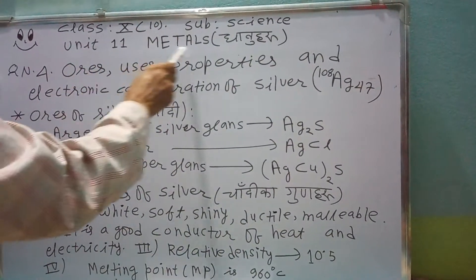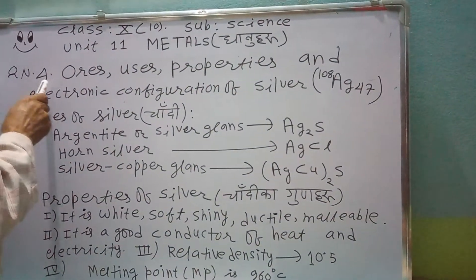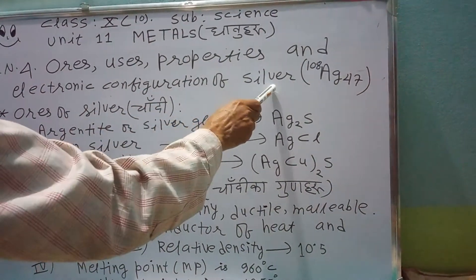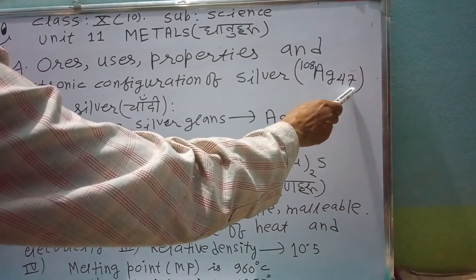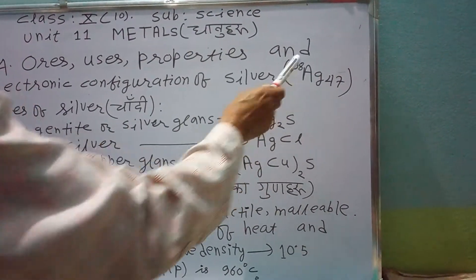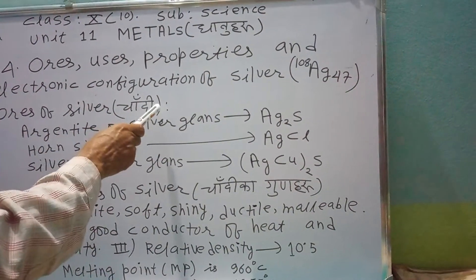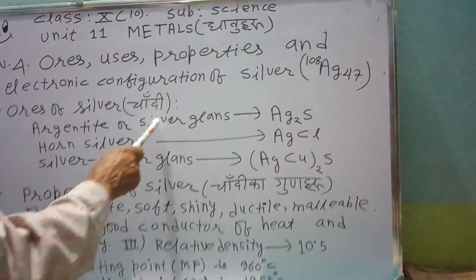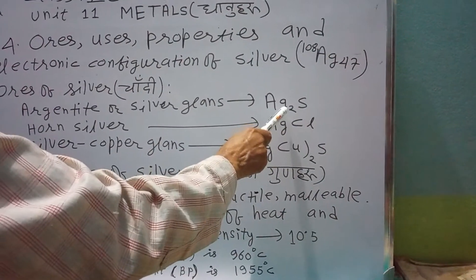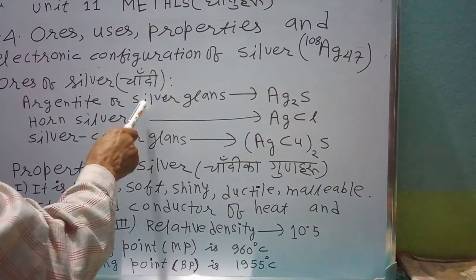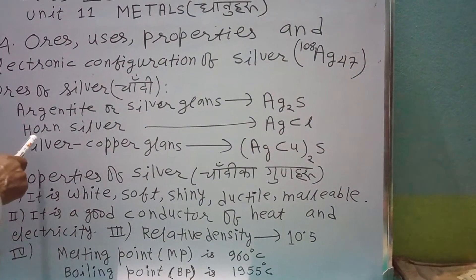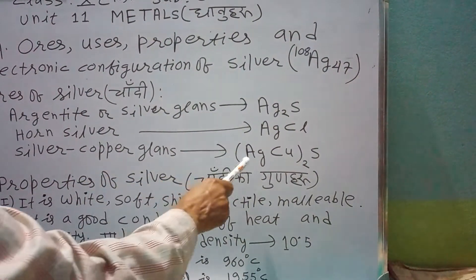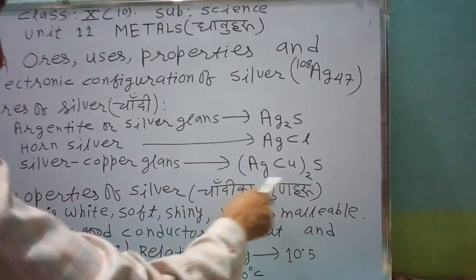Class 10, subject science, unit 11 metals. Question 4: Ores, usage, properties and electronic configuration of silver Ag 47 atomic number, 108 atomic weight. Ores of silver: Argentite or silver glance Ag₂S silver sulfide, it is the main ore of silver. Horn silver AgCl silver chloride. Silver copper glance AgCu₂S, it means silver, copper and sulfur.